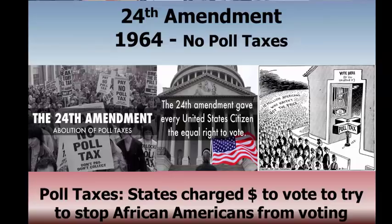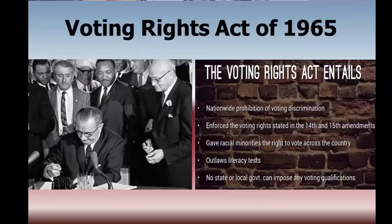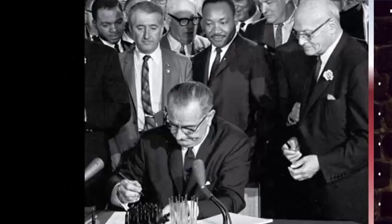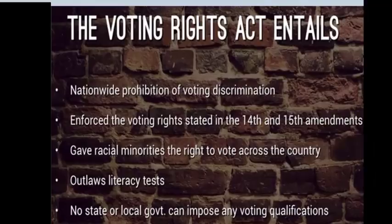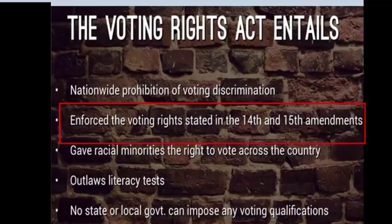The push to end discriminatory tactics to deny voting to minorities culminated with the passage of the Voting Rights Act of 1965. Now this isn't an amendment, but there's still a good chance it'll end up on your exam. Here we see Dr. Martin Luther King Jr. with President Johnson signing this important law, which prohibited any voting discrimination. It finally enforced the 14th and 15th amendments, got rid of literacy tests and other tactics, and finally made voting a right for all Americans.